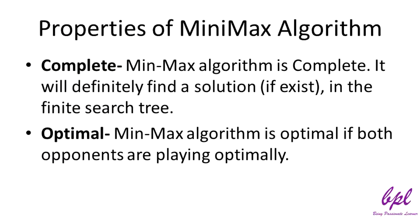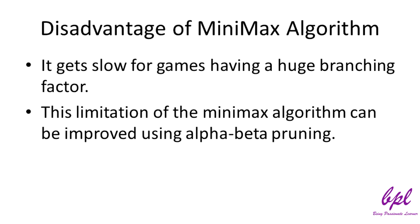Properties of the minimax algorithm: The minimax algorithm is complete — it will definitely find a solution in a finite search tree if a solution exists. The minimax algorithm is optimal if both opponents are playing optimally. Disadvantage of the minimax algorithm: It gets slow for games having a huge branching factor. That means if a player has lots of choices to decide, the minimax algorithm will be slow. This limitation can be improved using alpha-beta pruning.